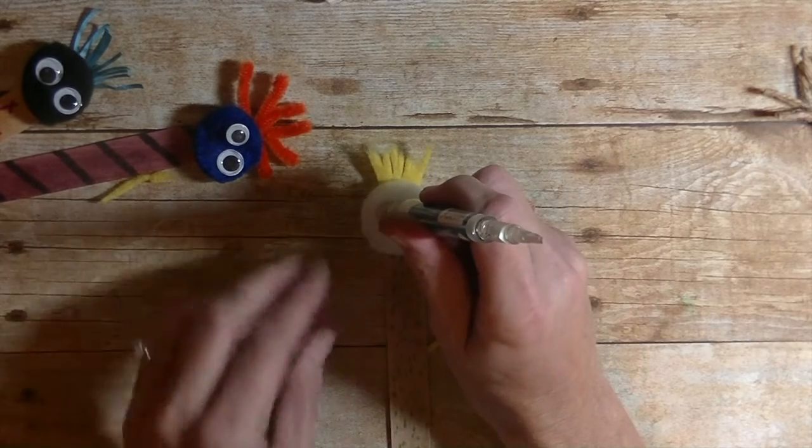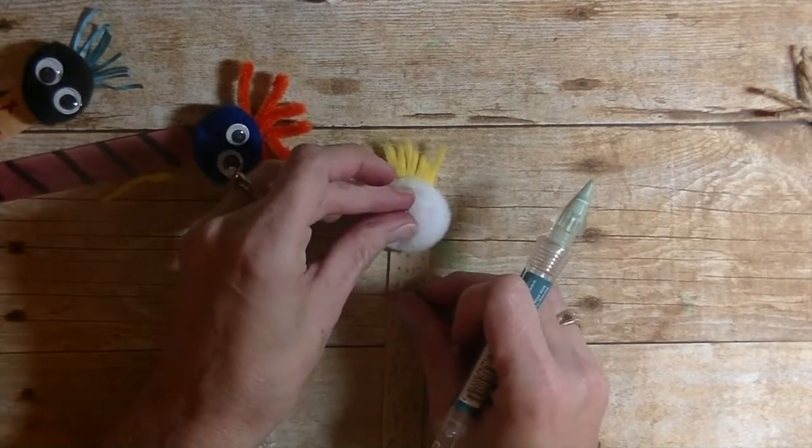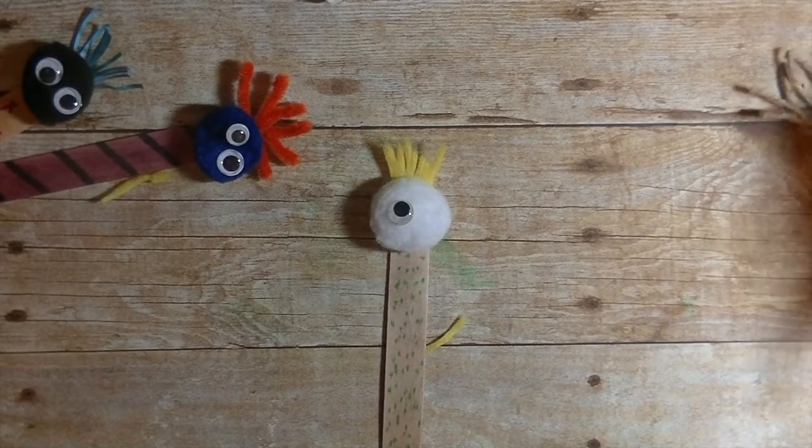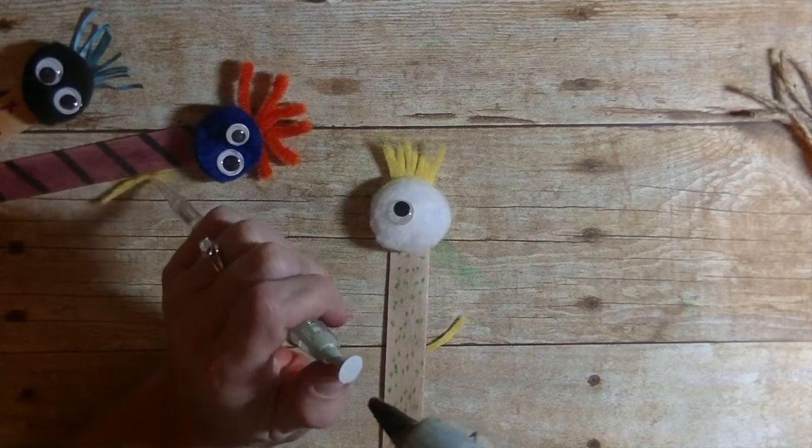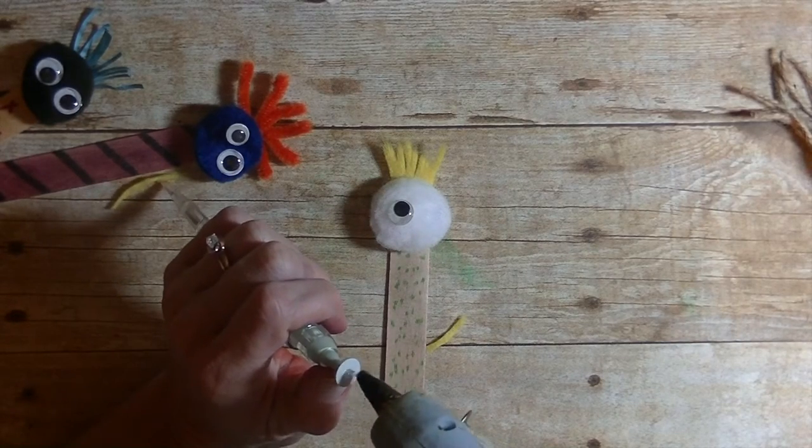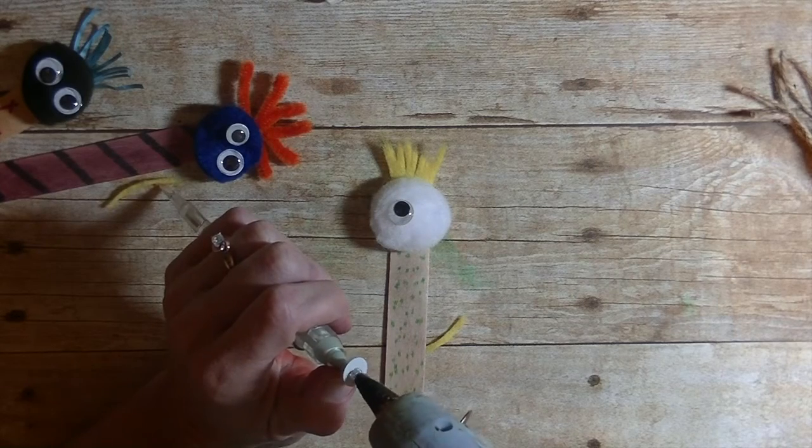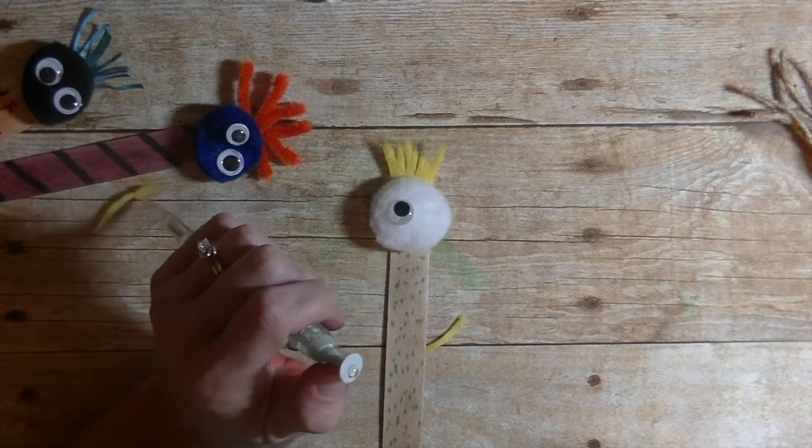And they could use buttons if they want to for the eyes. They can do one big eye, one small eye. And I think the best part about this is that they're creating their own little bookmark. So it may encourage them to read, which is always a good thing.